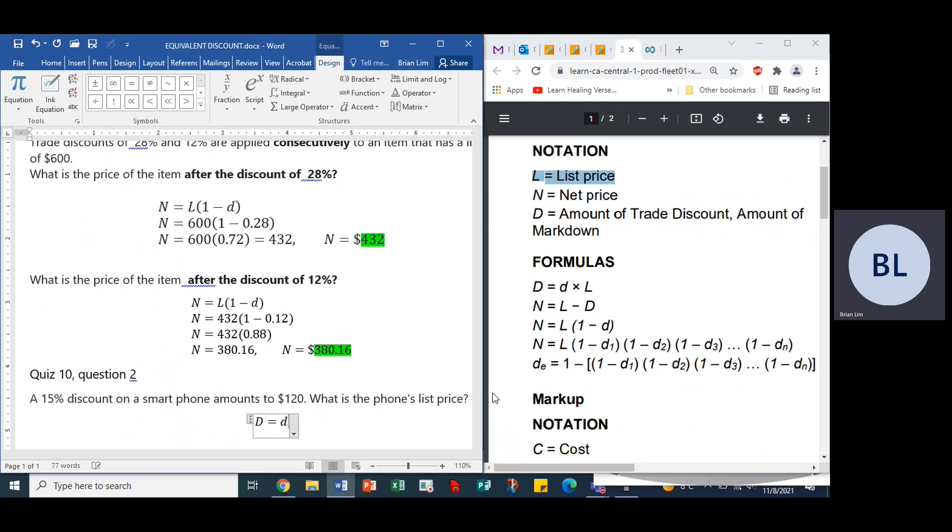So let's insert that formula or equation into this box here. D times, if you'd like to see multiplication signs, then there we are. So D is the amount of trade discount, right? So D in this case is $120, correct? Yes, it is $120. The lower case d is equal to 0.15, right?